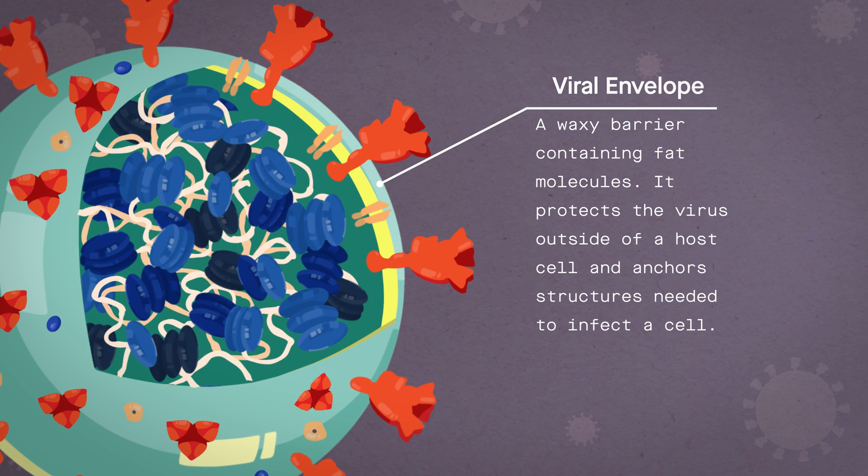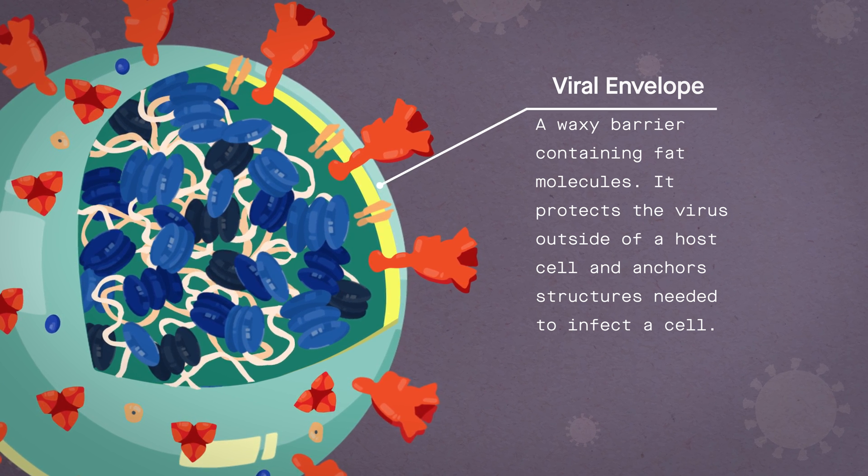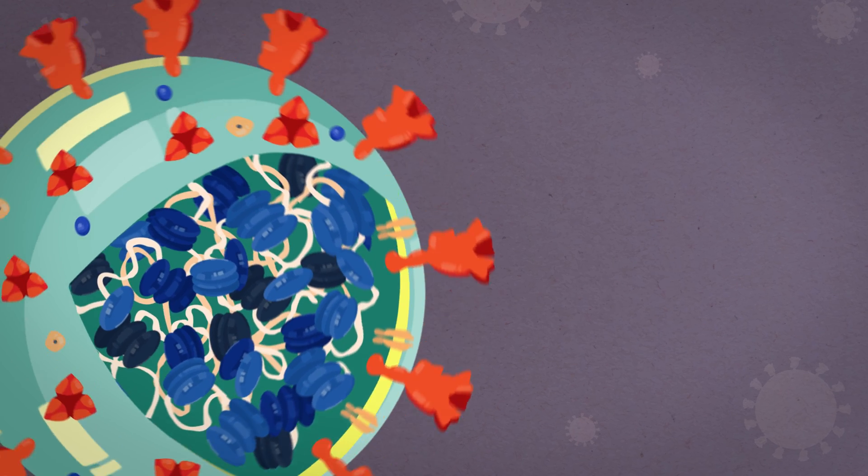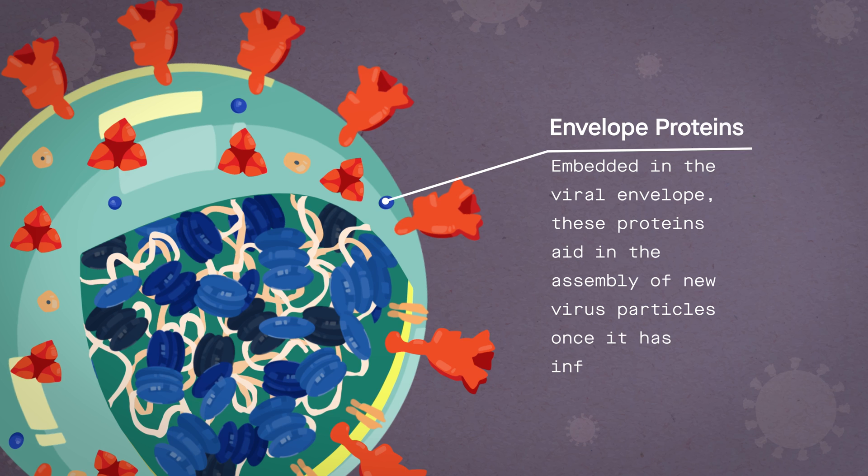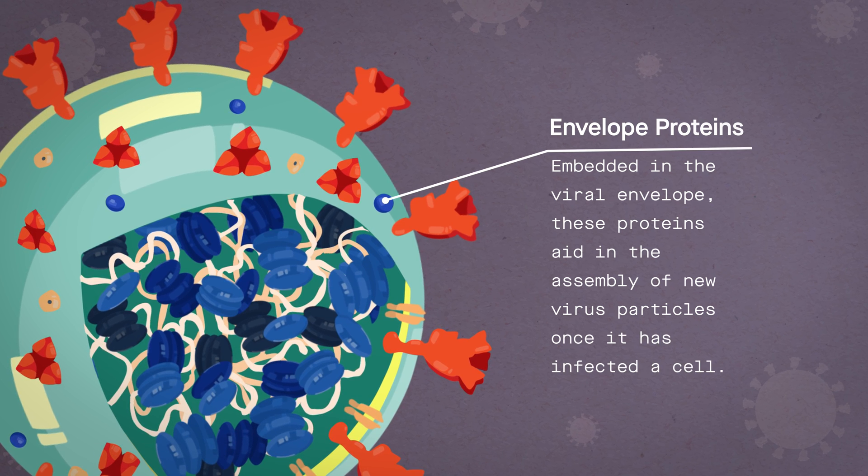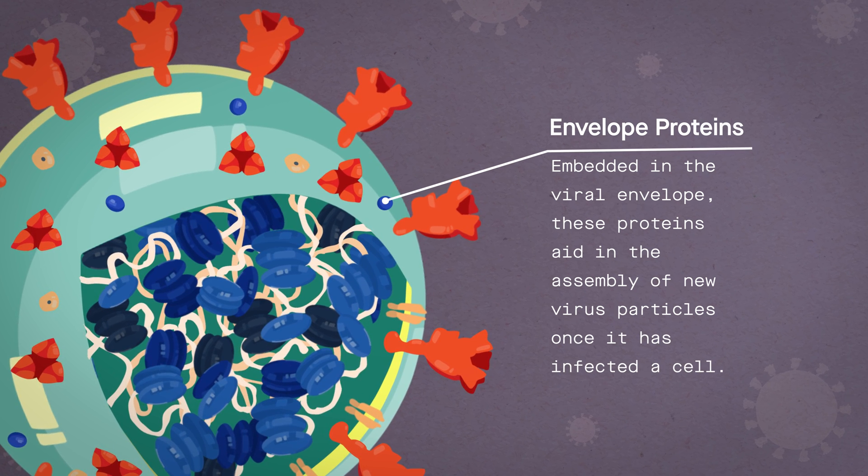This layer anchors the different structural proteins needed by the virus to infect cells. Envelope proteins embedded in this layer aid the assembly of new virus particles once it has infected a cell.